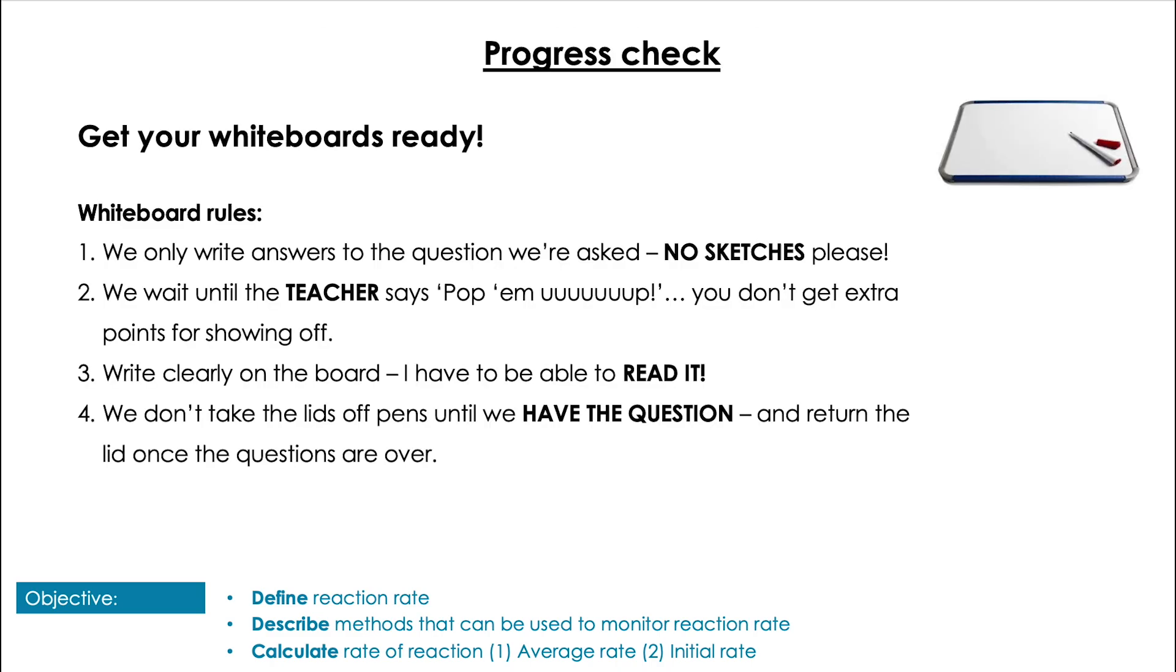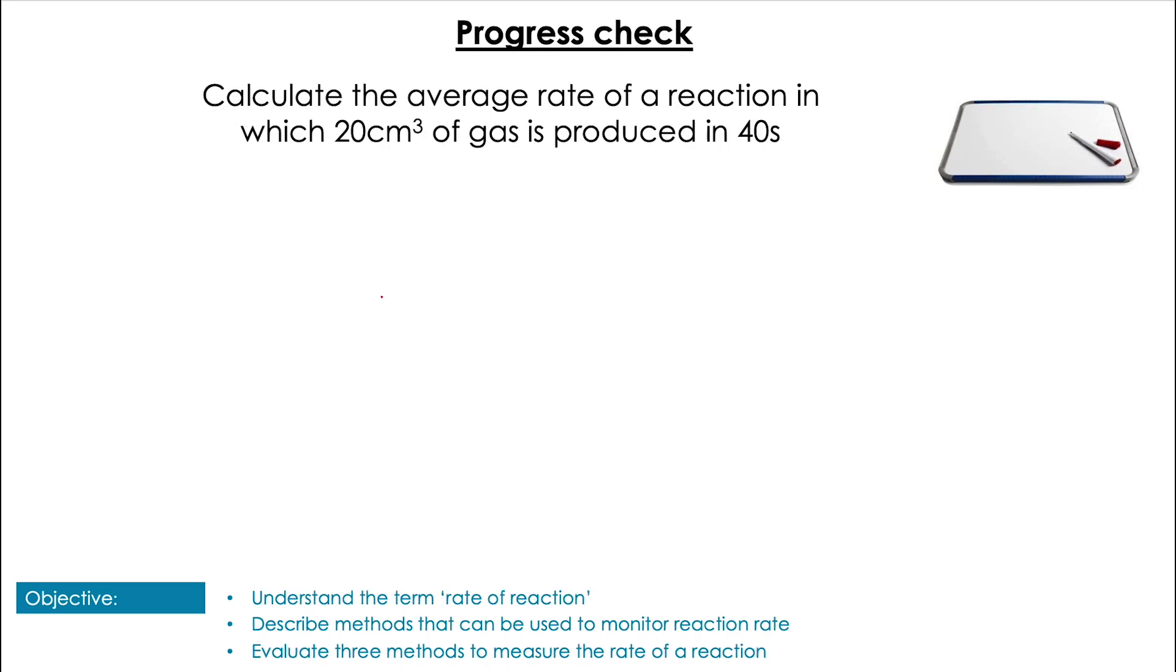Time for a couple of questions. First one, calculate the average rate of reaction in which 20 centimeters cubed of gas is produced in 40 seconds. Pause the video to have a go. Pop them up! A nice simple one to start with. We're going to do the change in concentration over the time, which is 20 over 40, which is 0.5 centimeters cubed per second.